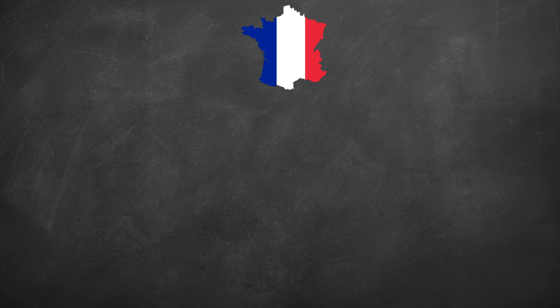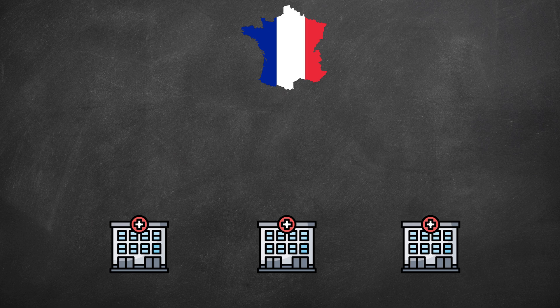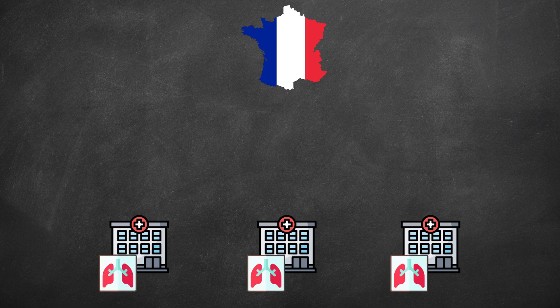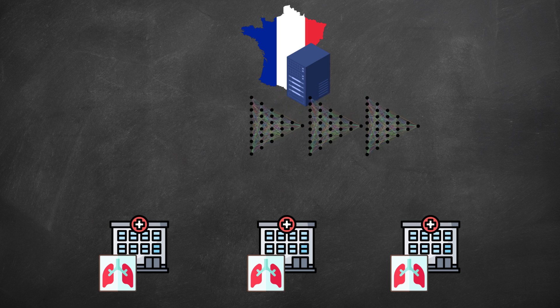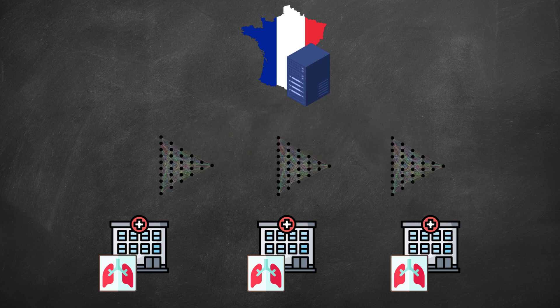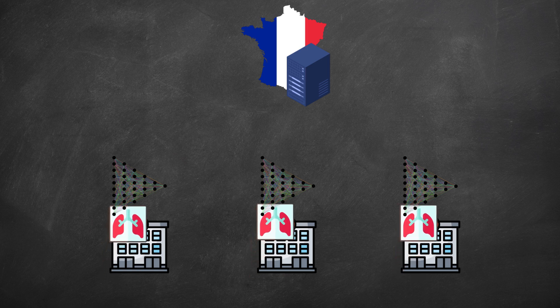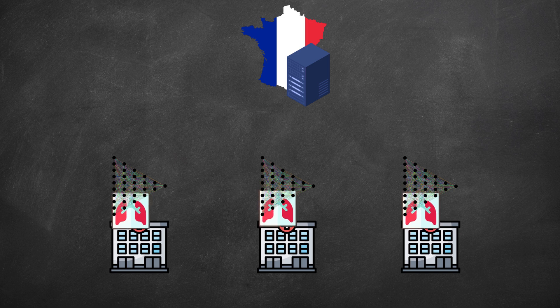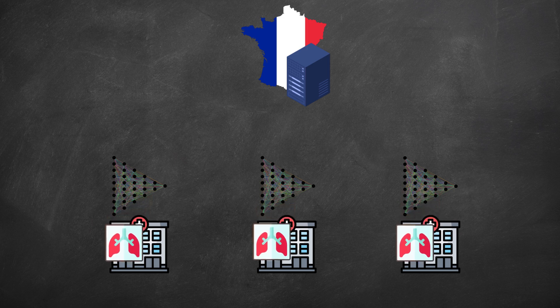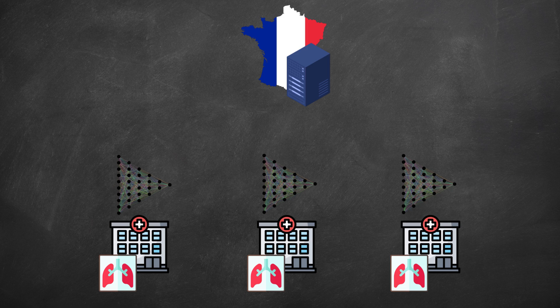To better understand federated learning, let's take the example of a state which wishes to improve its lung cancer detection system and a group of hospitals which holds confidential X-rays of their patients. The first step is to design a deep learning model capable of detecting this type of cancer. This model is initialized on a server, which transmits its parameters to all the hospitals participating in the experiment. Once received, the clients reuse the server parameters and optimize them on their local data, as would be done for centralized learning — in this case, using the X-rays present in the hospital to train.